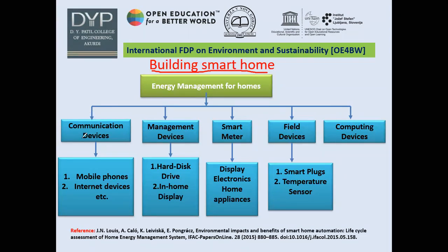For communication devices — like mobile phones and internet — we should select devices that consume very little power and operate on renewable energy sources. They should also be smart, meaning they should not consume power when not in use — for example, automatically switching off when no one is attending to them. For management devices like hard disk drives and home display systems, these should also work in an efficient manner, using IoT devices to track which devices are idle and automatically manage their power.